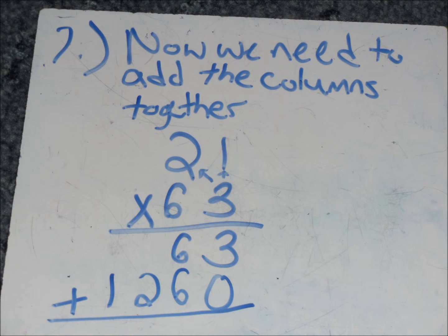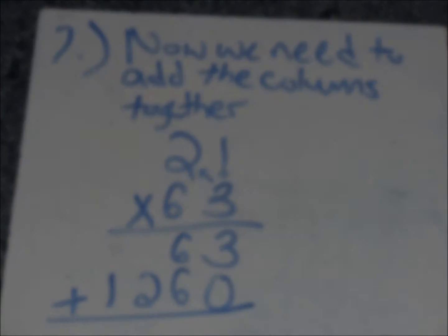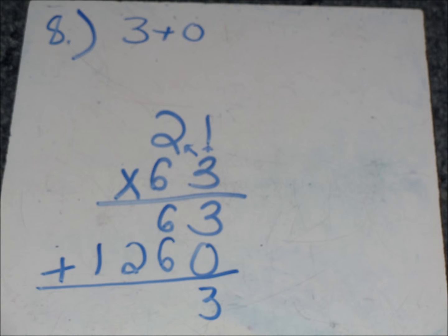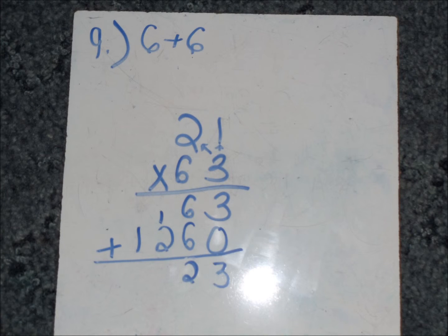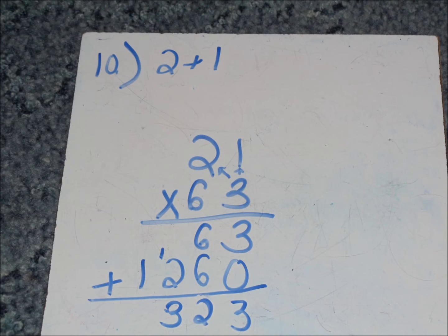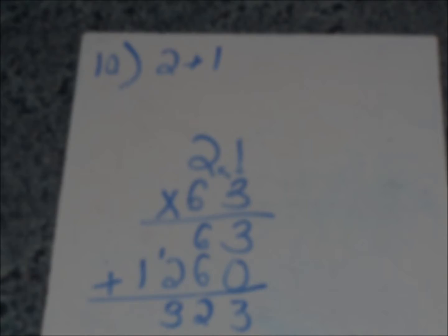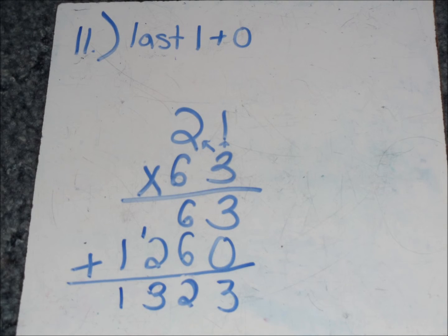Now we need to add the columns together. 3 plus 0 is 3. 6 plus 6 is 12. So, put the 1 over top of the 2, and put the 2 underneath the 6. 2 plus the 1 is 3, and 1 plus 0 is 1.